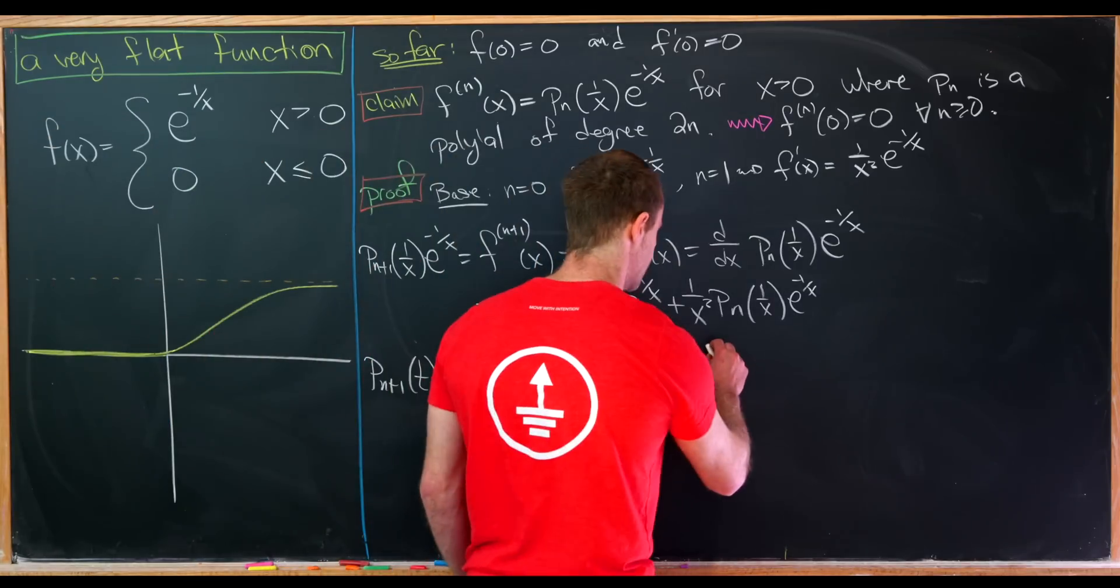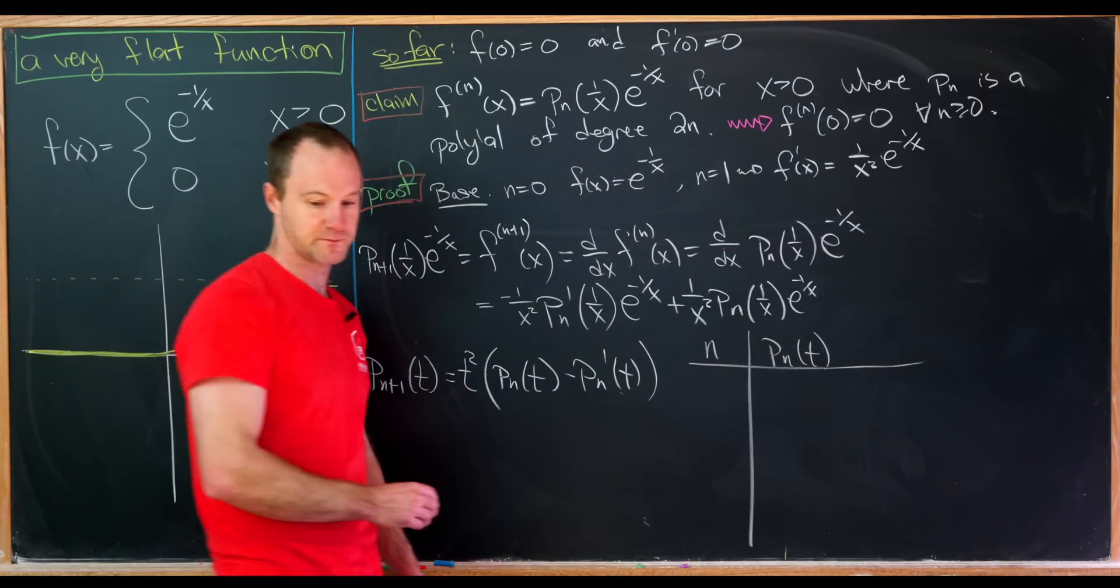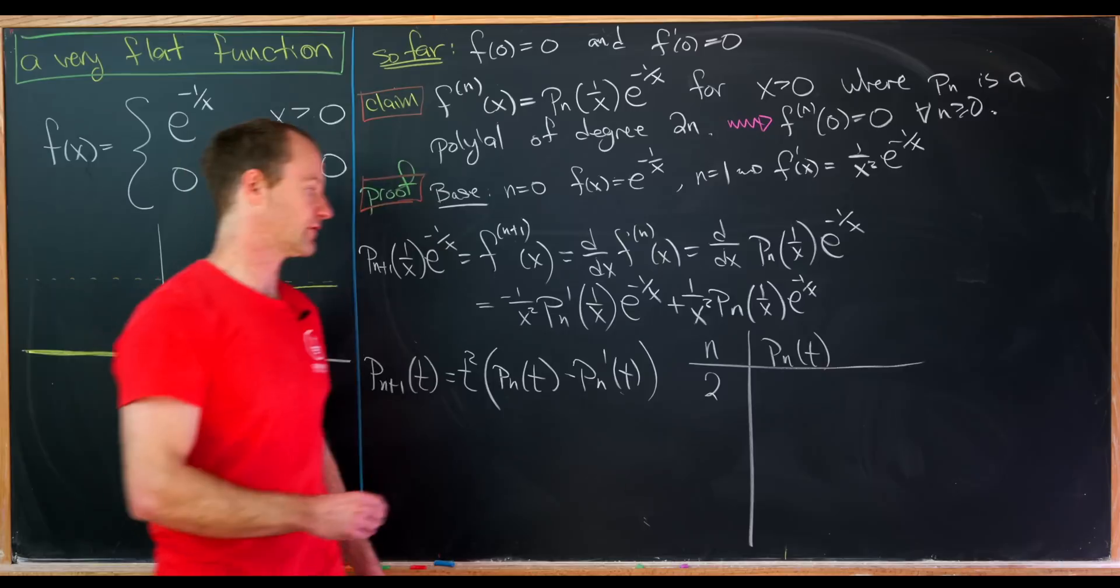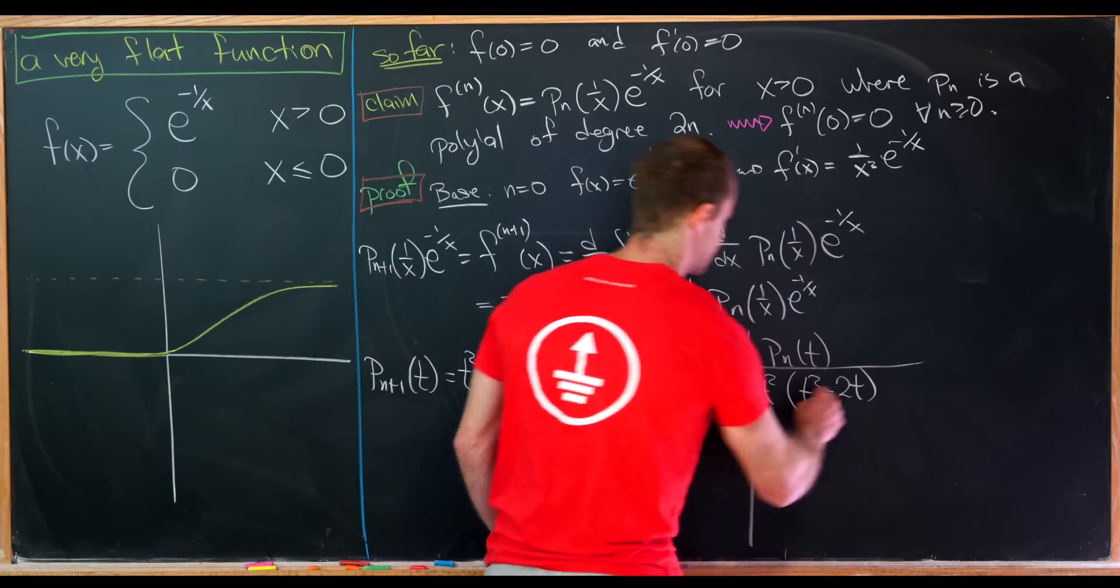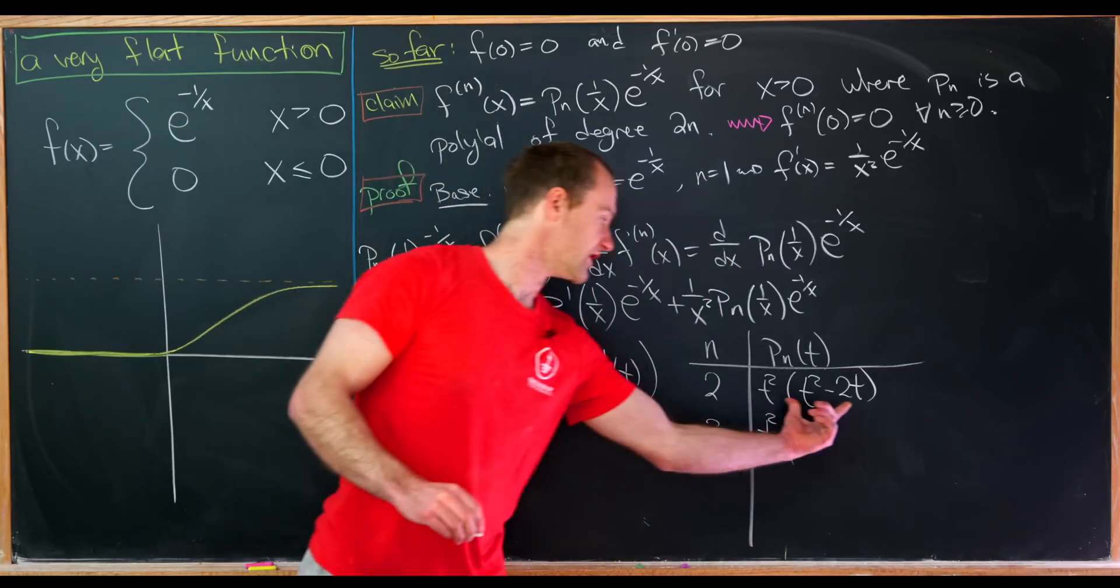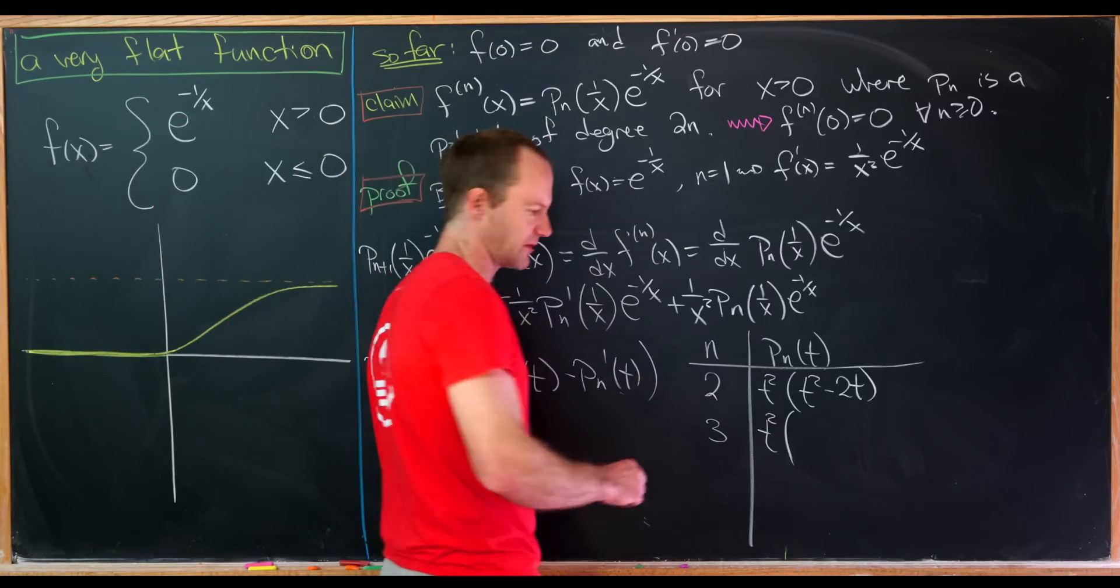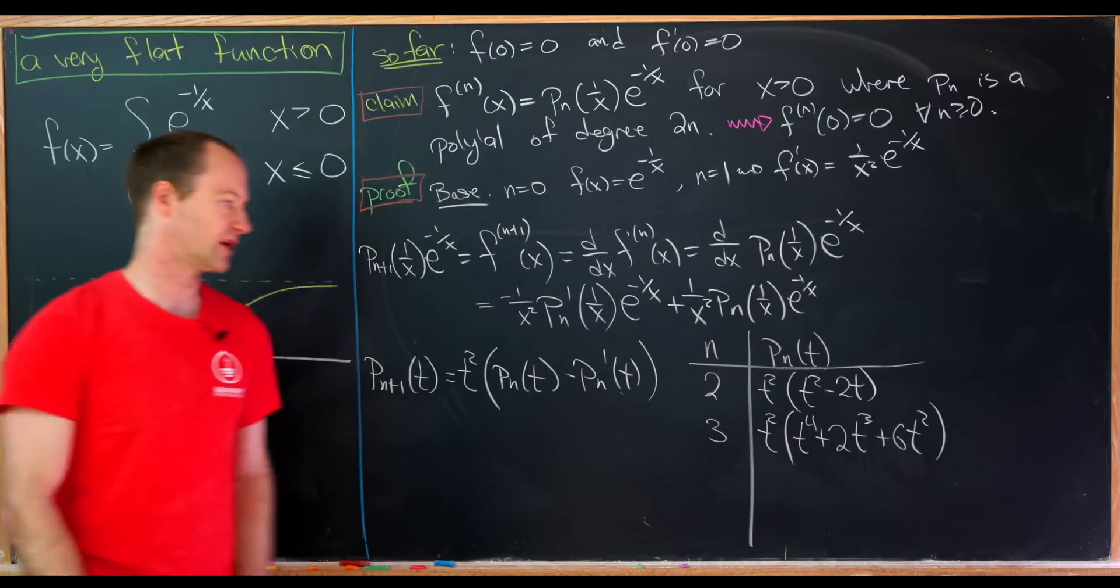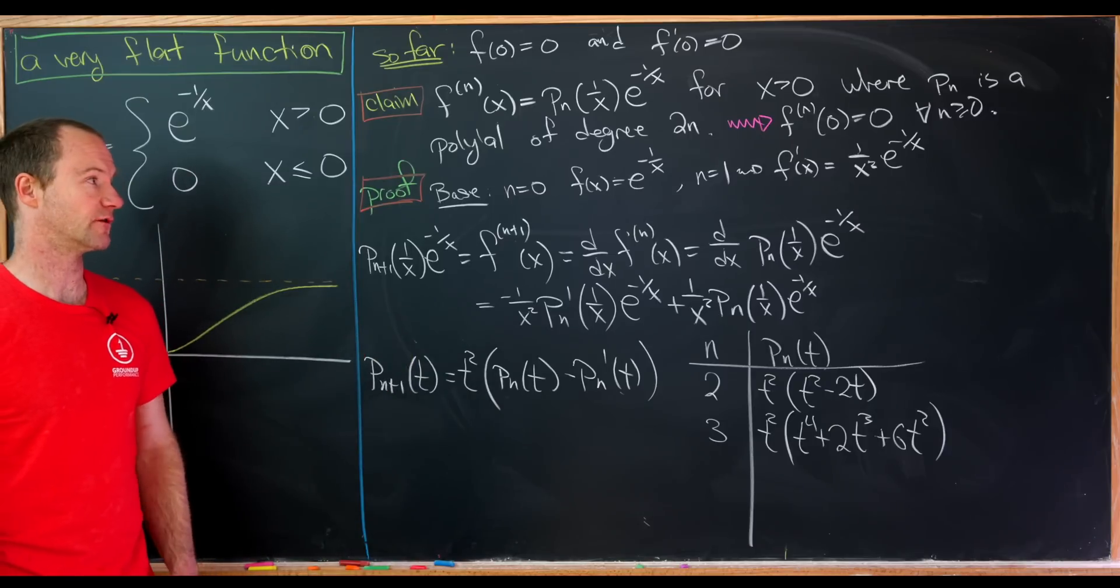And like I said, we can calculate some of the values of this fairly easily. So let's say we have n and then p sub n t here, and let's write out a couple of them. So let's maybe skip down to 2 because we already know 0 and 1 from this setup up here. So for 2, we'll have t squared times t squared minus 2t. And then for n equals 3, we'll have t squared. And then we'll have this function minus its derivative, where we've multiplied all of that out. So that'll end up giving us something like t to the fourth plus 2t cubed plus 6t squared. So that's what we get for the n equals 3 case. And then I'll let you check the rest of them. But notice this is a nice and efficient way of calculating all of those polynomials.